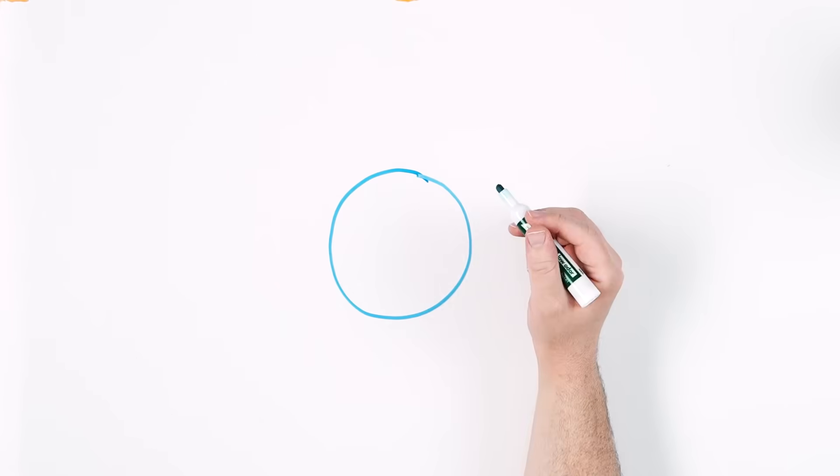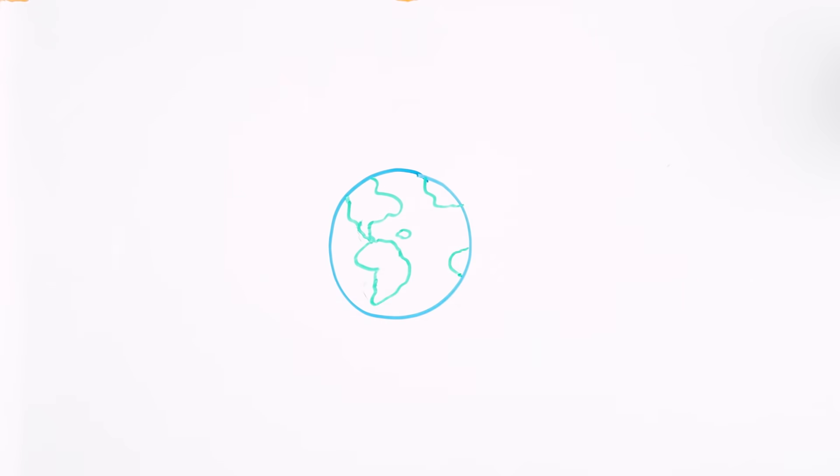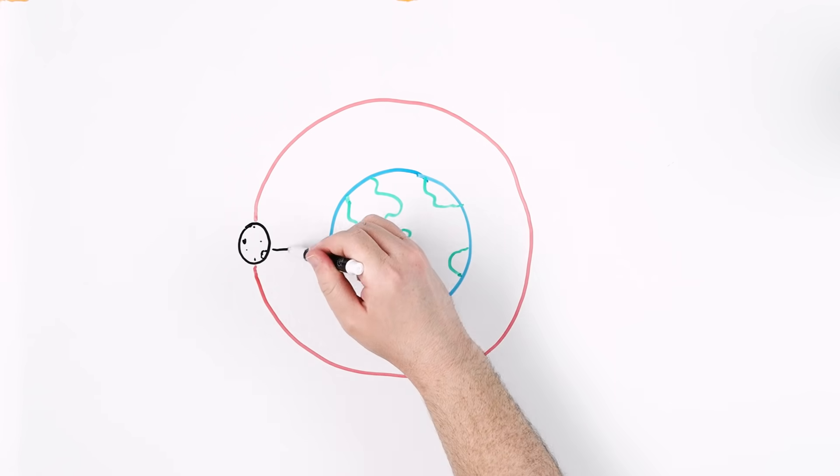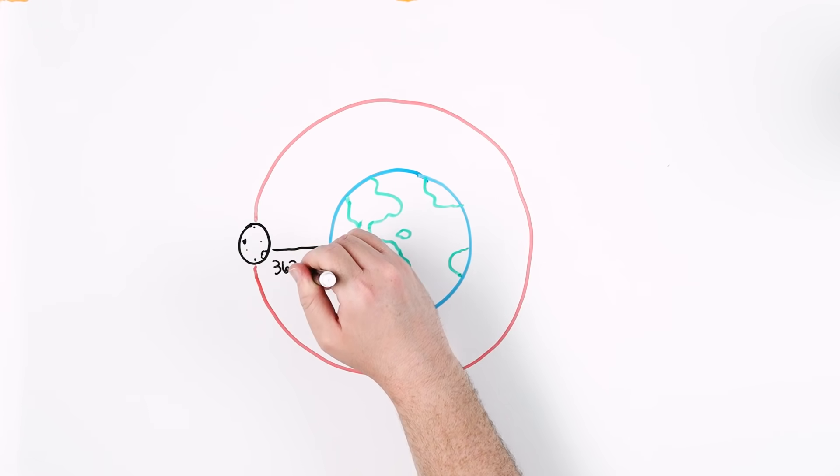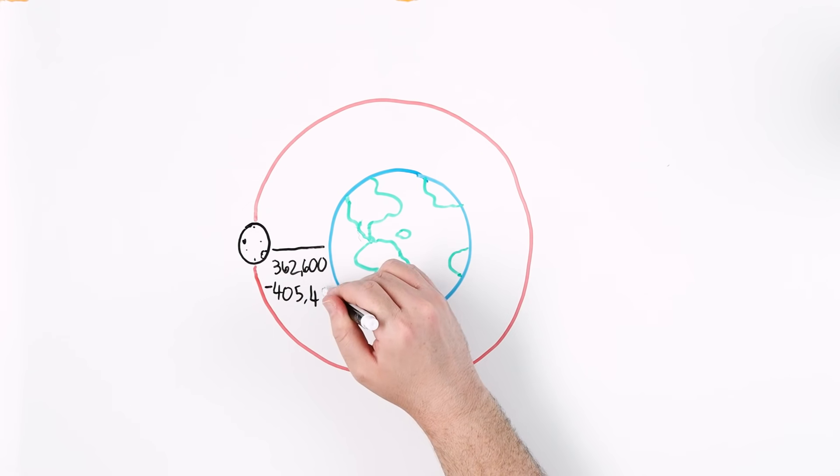To begin with, let's get some basic moon facts straight. The moon is in an elliptical orbit around the Earth. Its distance from Earth ranges from 362,600 to 405,400 kilometers at any given point.